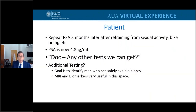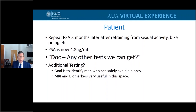We repeat the PSA three months later after refraining from sexual activity and bike riding. This PSA is now marginally elevated at 4.8, and the patient asks if there are other tests to avoid biopsy. The goal of additional testing is to identify patients who can safely avoid a biopsy. MRI and biomarkers are very useful here. I'm not going to talk about MRI — Dr. Andreoli will cover that in the subsequent talk — but think of MRI as a biomarker as well.